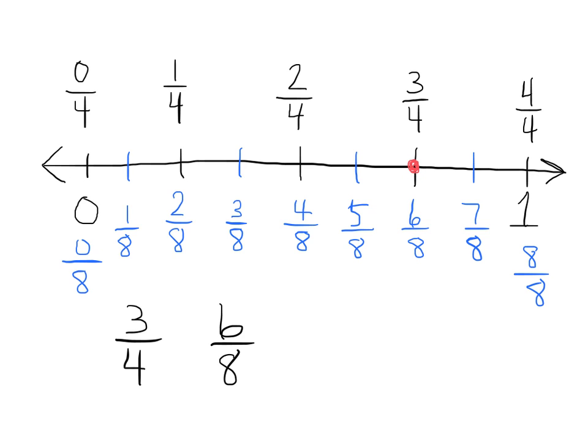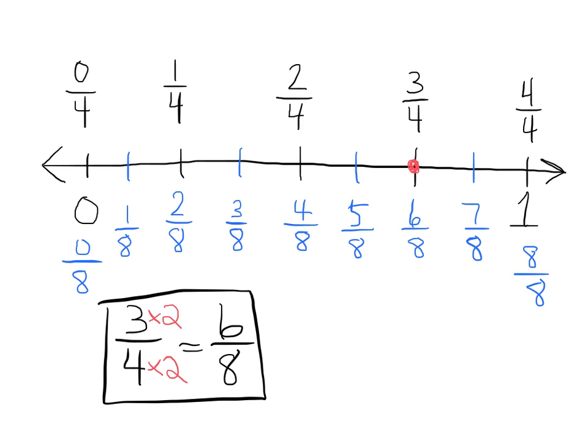Now what we want students to start recognizing is this pattern. So teachers, parents, turn it into a game where whenever a student sees a relationship between two equivalent fractions, let them raise their hand and say, 'I see a relationship!' In this case, we see that both three and four are doubled, and that gives us six-eighths. That's one relationship we want them to see.